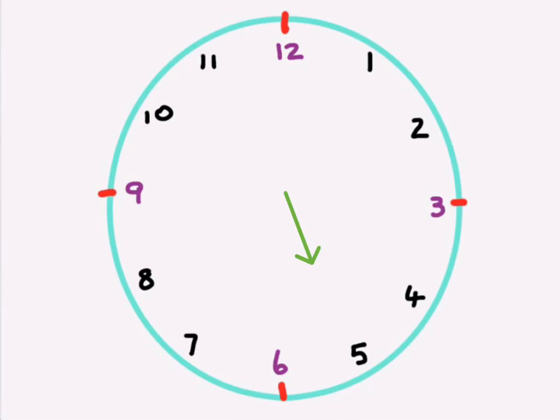But now what happens if it points to the two instead? Well, this is where we start using counting in five. So we start at 12, remember? So we're going to go five, 10. So we're going to say then it's 10 past five.